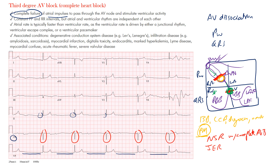So what you have here is normal sinus rhythm with complete heart block — third-degree AV block — with a junctional escape rhythm. The activity in the precordial leads that may appear alarming is artifact, not ventricular fibrillation, as the deflections go both above and below baseline in an irregular pattern typical of artifact.